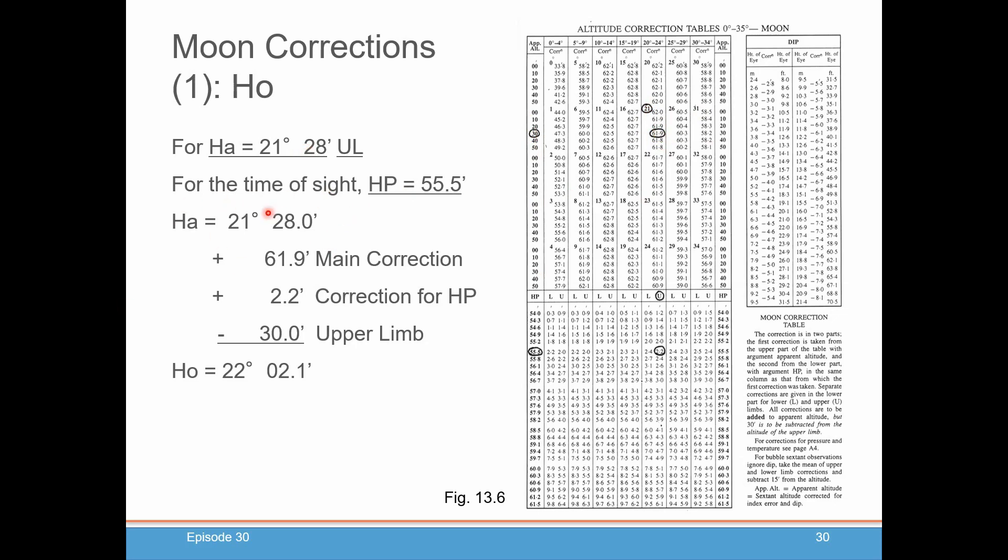We're starting our little calculation here. We have 21 degrees, 28 minutes is our HA. We're adding the main correction, 61.9. And now, here's where the HP comes in. You look here for the HP that we read, which was 55.5. Here we go. And then you go in the exact same column you were in, whichever column the range fell. And then you have a lower and upper limb correction. We took an upper limb. So that's 2.2. That's a plus.